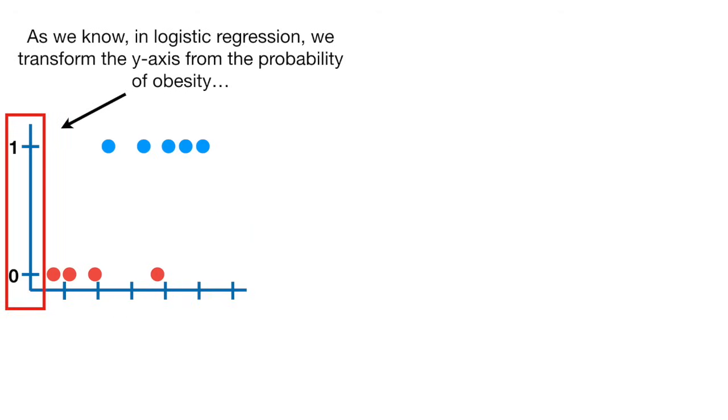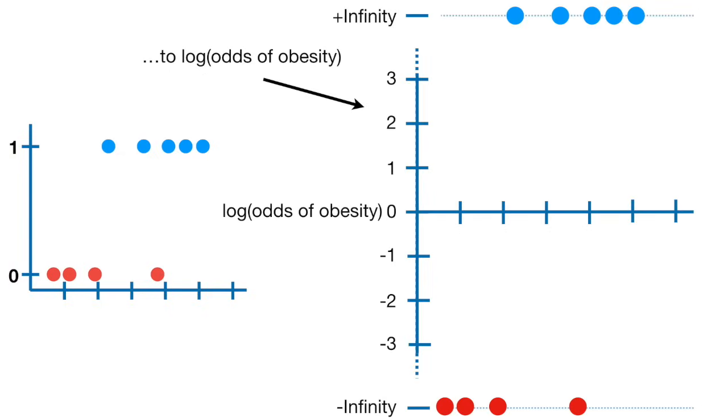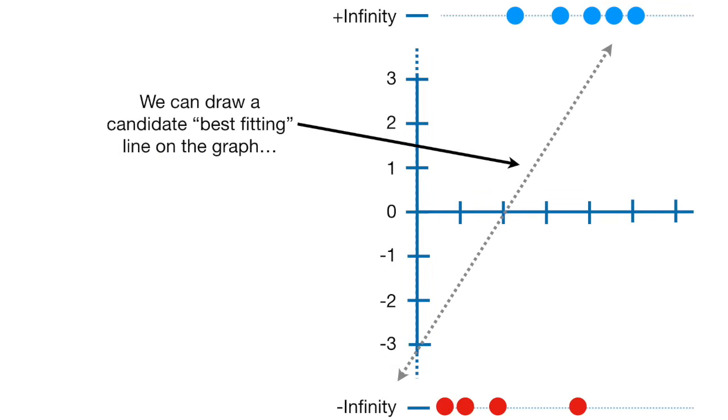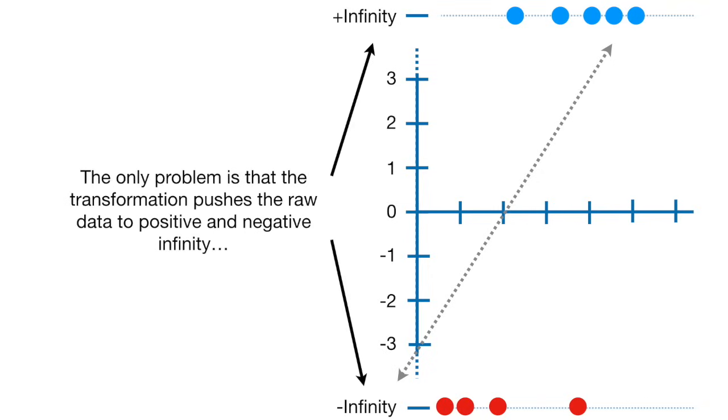As we know, in logistic regression, we transform the y-axis from the probability of obesity to the log odds of obesity. We can draw a candidate best-fitting line on the graph. The only problem is that the transformation pushes the raw data to positive and negative infinity.